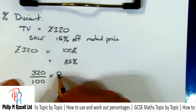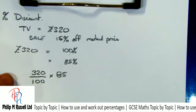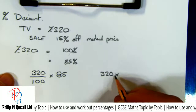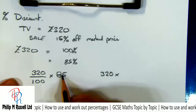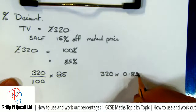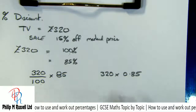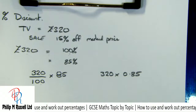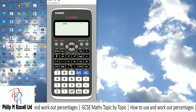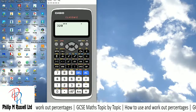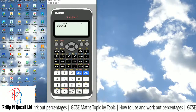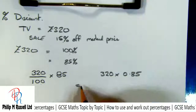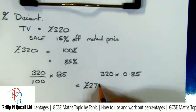To find 85% of £320: take 320, divide by 100 to find 1%, then multiply by 85. Alternatively, multiply by the multiply factor 85/100 = 0.85. On the calculator: 320 × 0.85 gives £272.